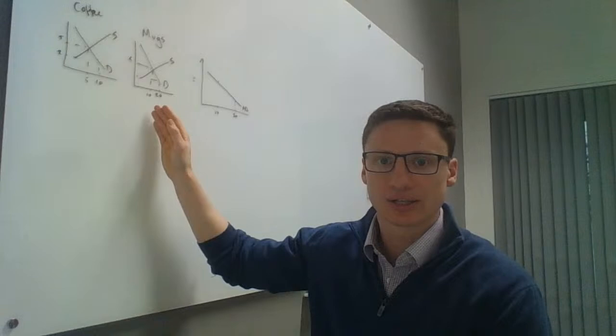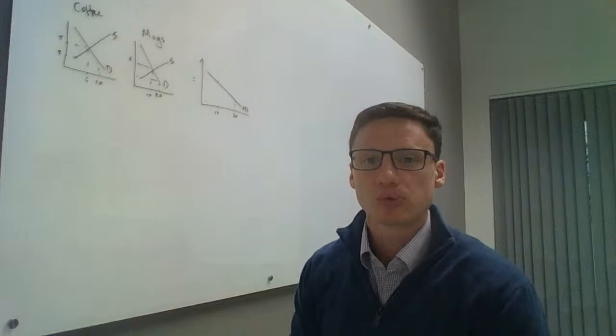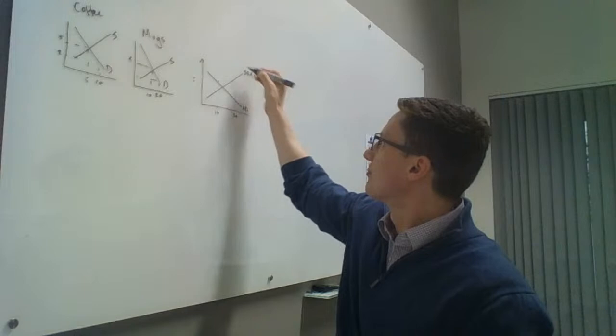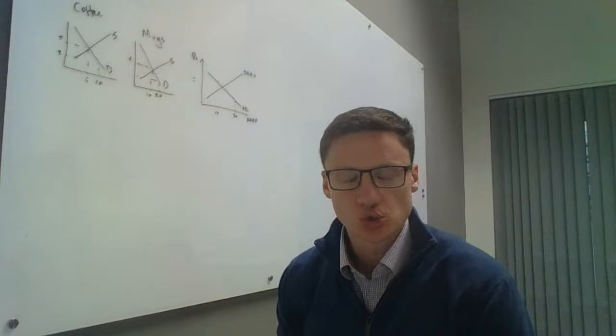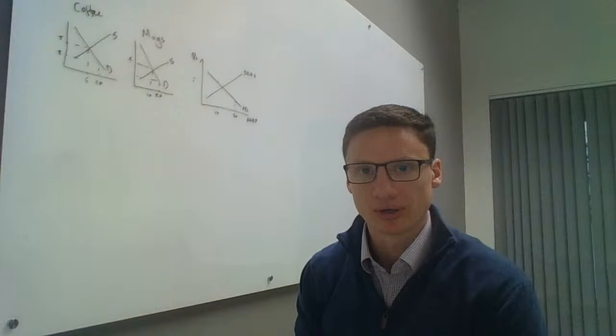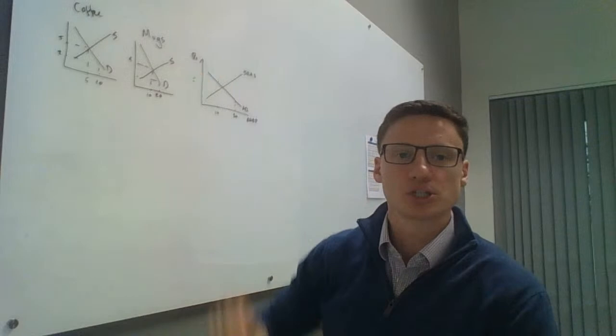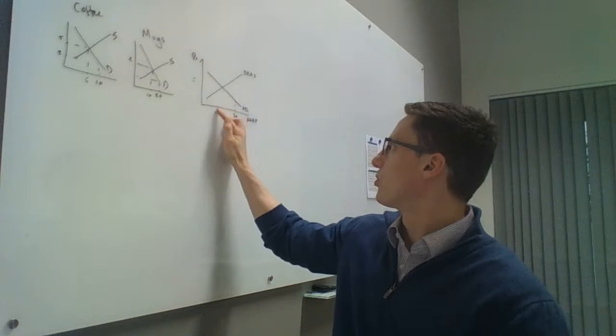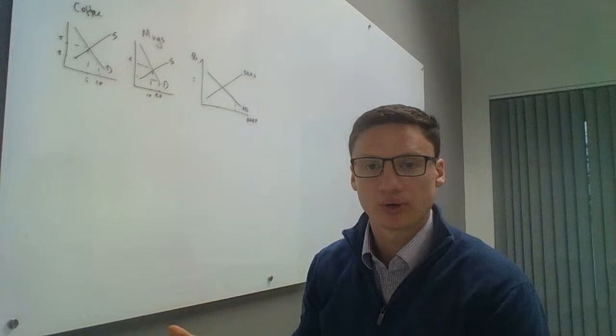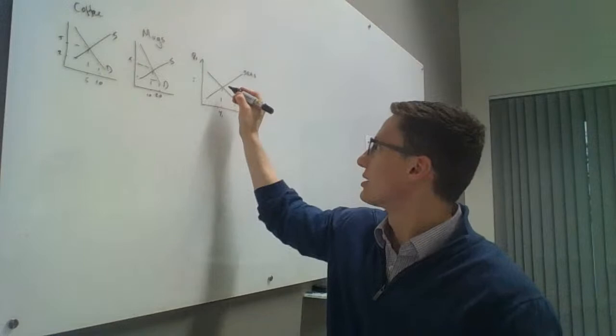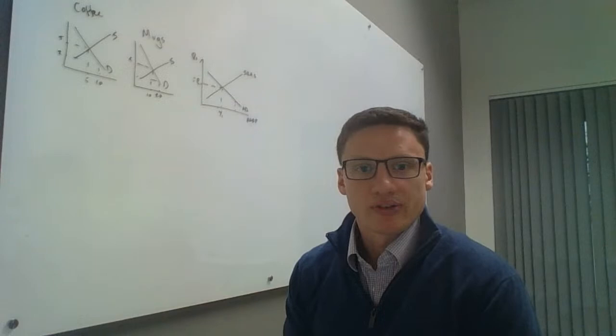We call it AD because now this is aggregate — it's the sum of all demand curves in the economy. If you do the same for supply curves, adding two upward sloping curves together also gives an upward sloping supply curve — we call this the short run aggregate supply curve. It's short run because in the short run we are constrained by the law of diminishing marginal returns. This is Adam Smith's simplistic model of the macroeconomy: AD and AS, giving us output Y1 and a price level.